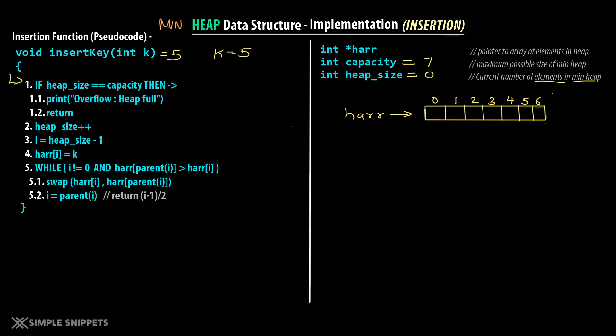Step 1: we check if heap size equals capacity. Right now heap size is 0 and capacity is 7 — is 0 equal to 7? No. So steps 1.1 and 1.2 will not be executed because the heap is not full. We can clearly see the heap is empty, so step 1 will not execute. We move to step 2.